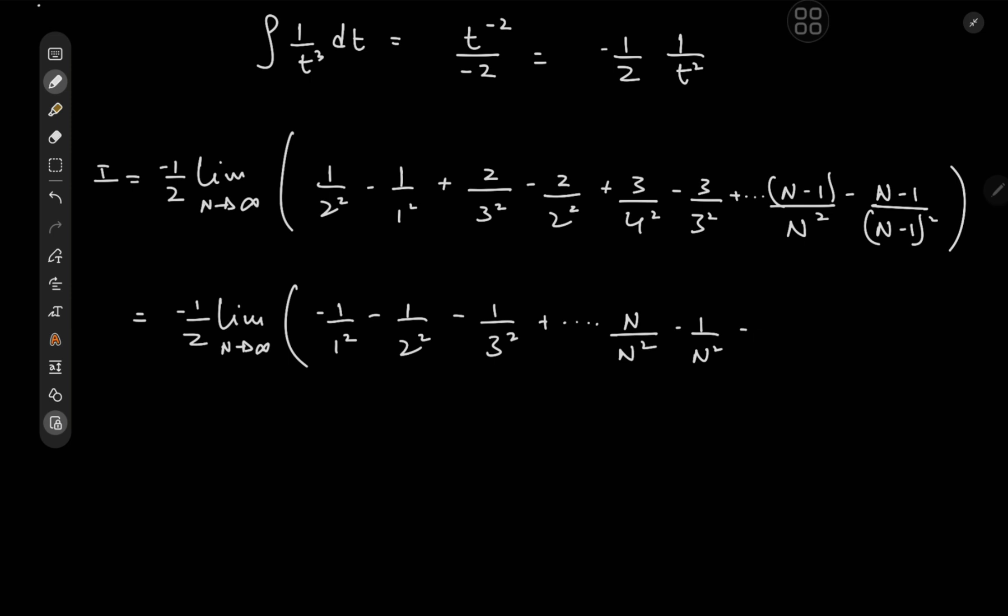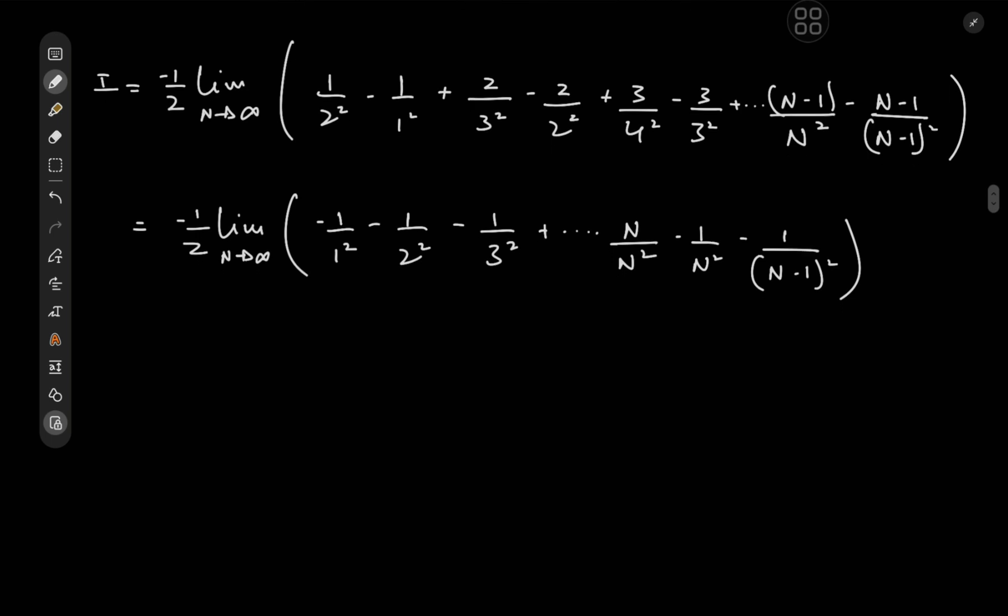And we're definitely going to have a negative sign here with a n minus 1 squared in the denominator. Yeah, that about adds up because we would have an n minus 2 term over n minus 1 squared, correct? Yeah, everything seems to be adding up quite nicely.